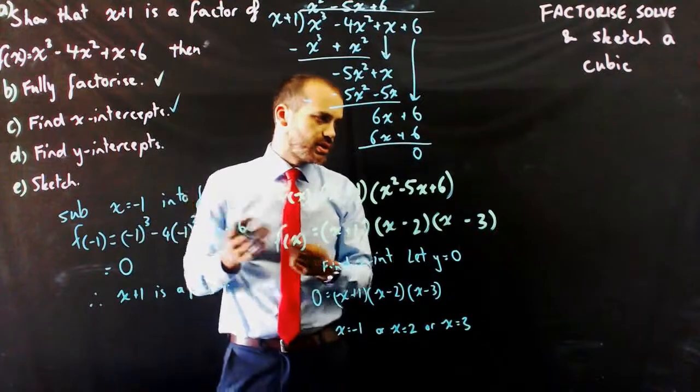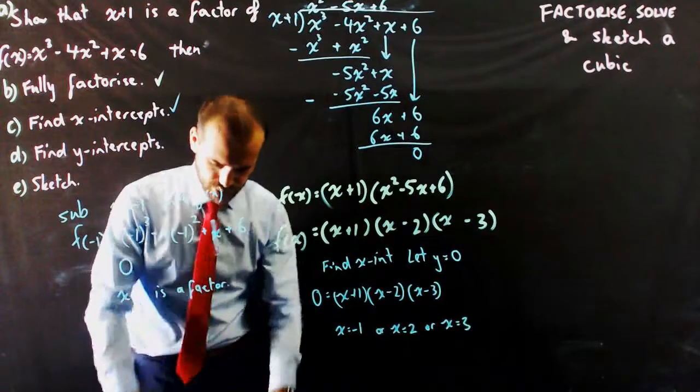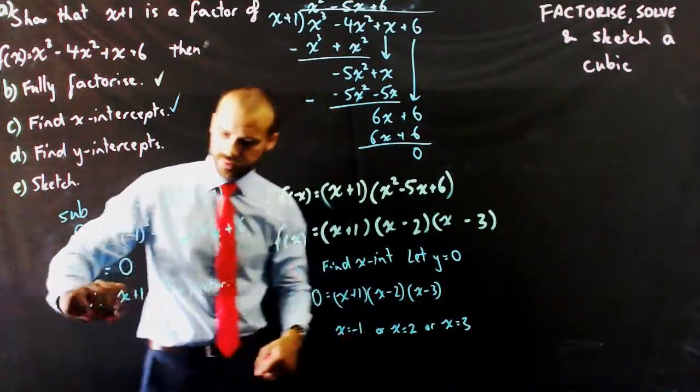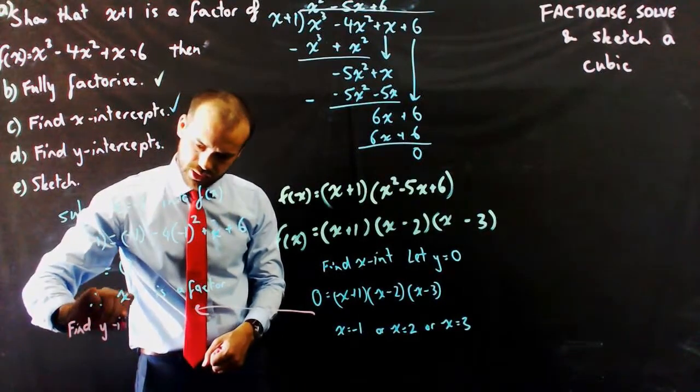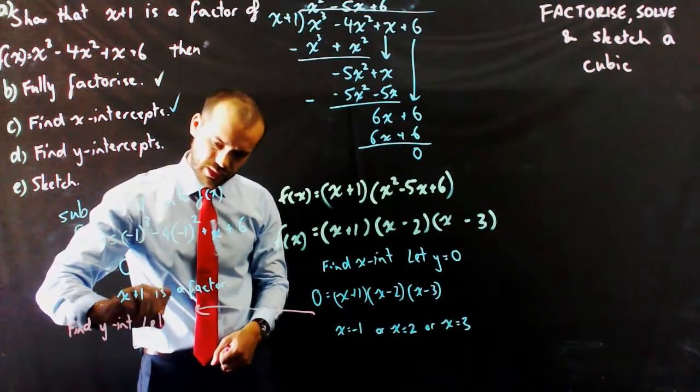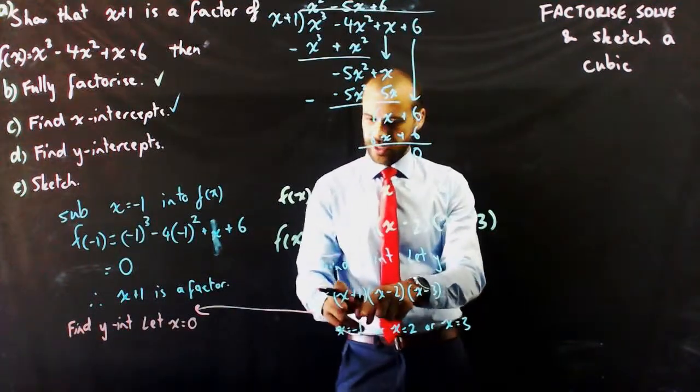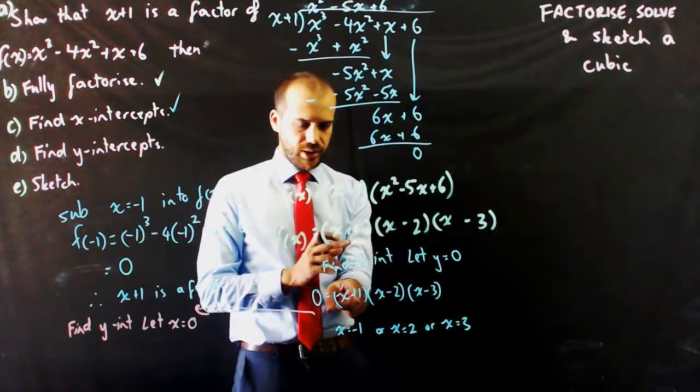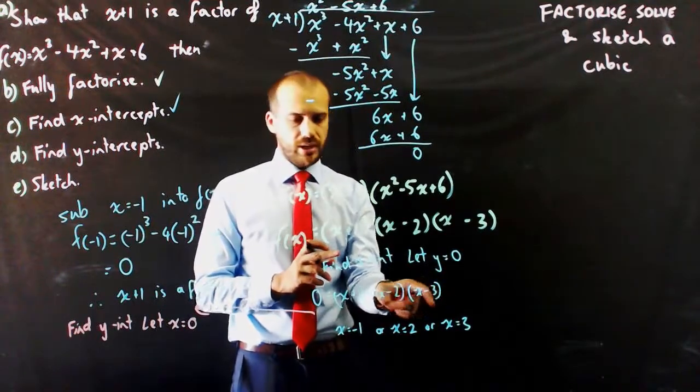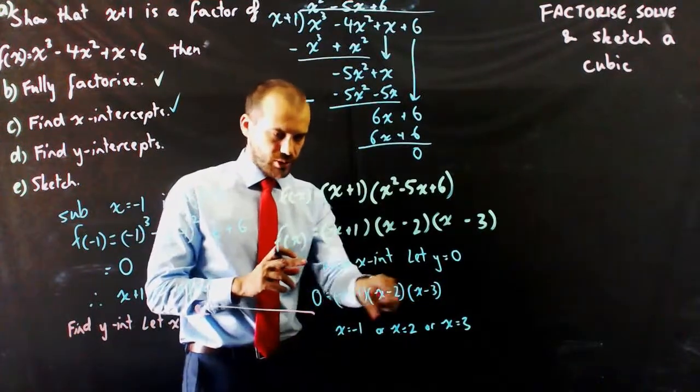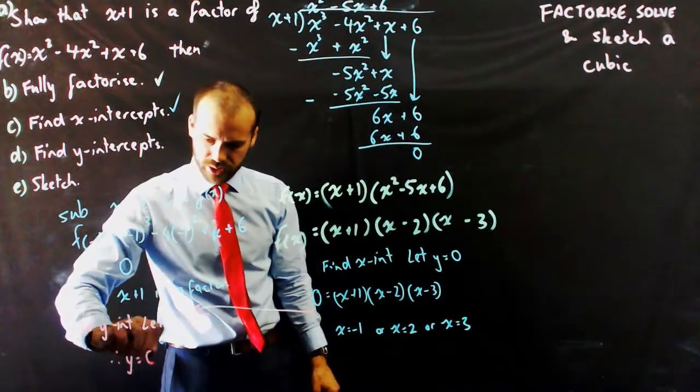Find y intercepts. I've thrown this in as a bit of a trick question. To find the y intercepts, do this down here somewhere. Just move over here. To find y intercepts, we let x equal 0. Now you can do it in here. In this case it's going to be 0 plus 1, so that's 1. 0 minus 2, that's minus 2. 0 minus 3. So if you put 0 in there, you're going to get a y value. Therefore y equals 6.